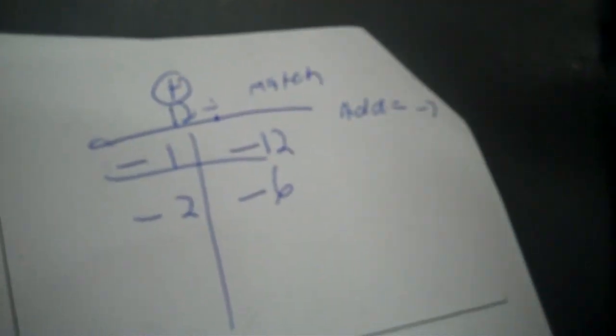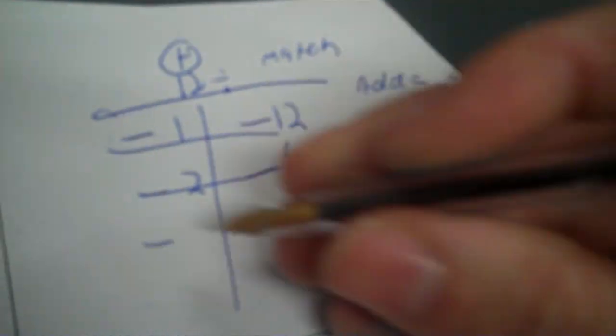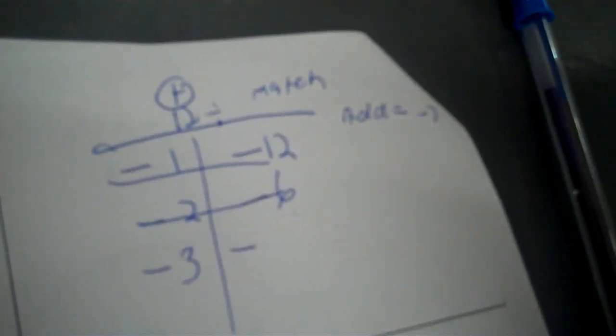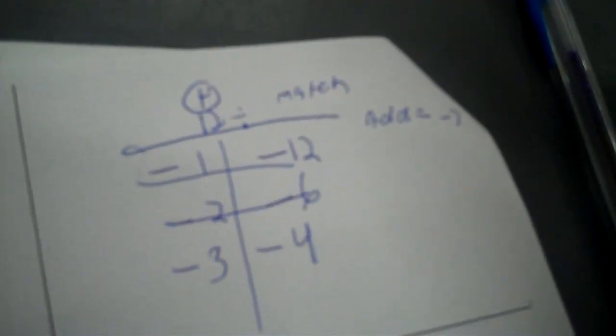When you add, that's when you want to bring your negatives in. Negative 8, that's close, but it's not good enough. So 12 divided by 3 is 4. Negative 7. That's exactly what I want. So I put in negative 3, negative 4.